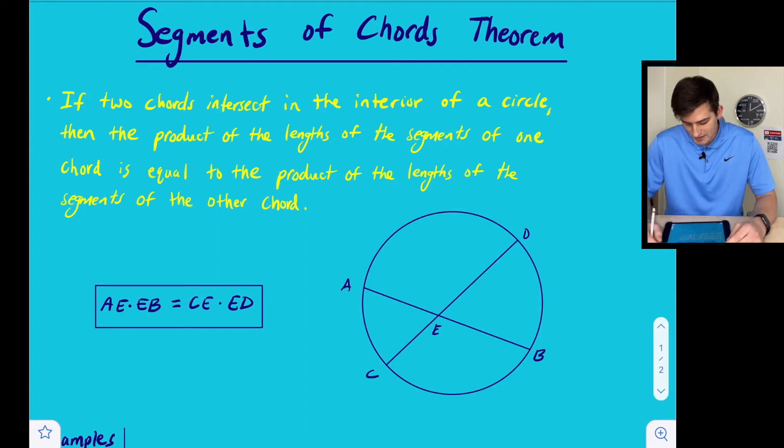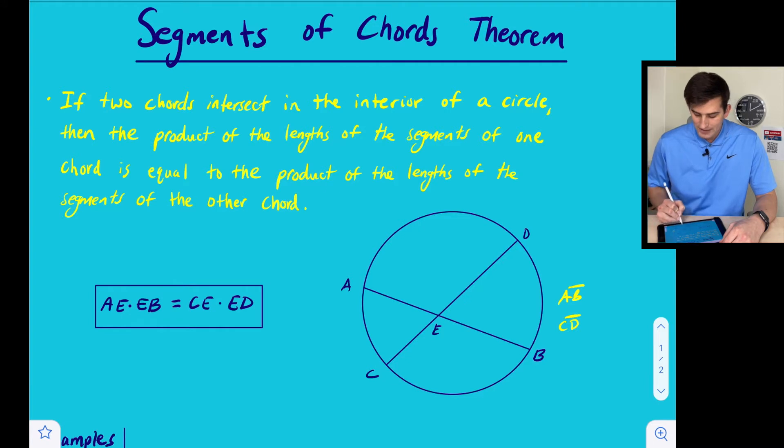So it's a little wordy, but let's look at this diagram right here. So we have two chords. We have chord AB, and we have chord CD, and they are intersecting right here at point E.